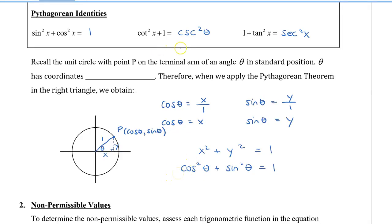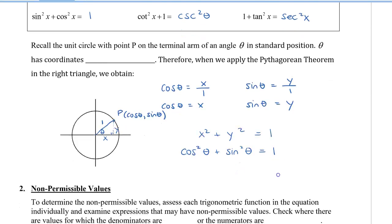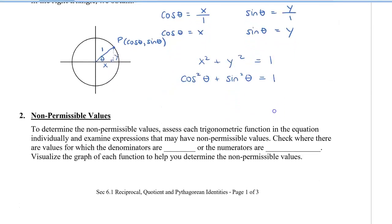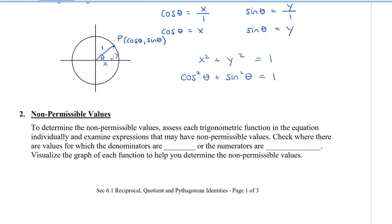To find the other two Pythagorean identities, we'll do that as an exercise in class. Now, let's take a look at non-permissible values. To determine the non-permissible values, we're going to assess each trig function in the equation individually, and then examine the expressions that might have non-permissible values.